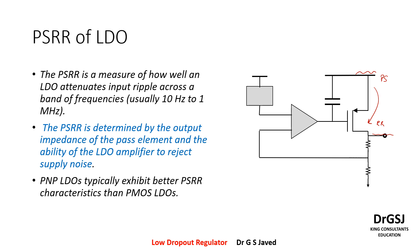This rejection ratio is given as the output ripple over the input ripple, and is typically expressed as a percentage or in dB. It is a gain factor that comes into consideration. How is this applied? The ripple is considered across the frequency spectrum from close to DC — around 10 Hz — all the way up to 1 megahertz.